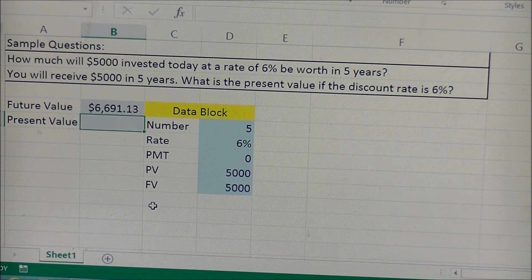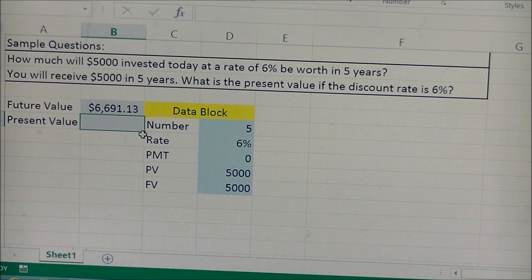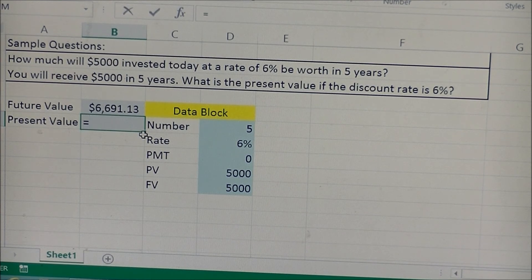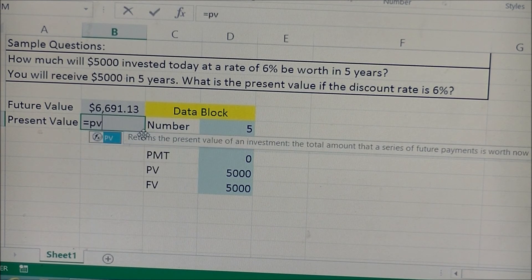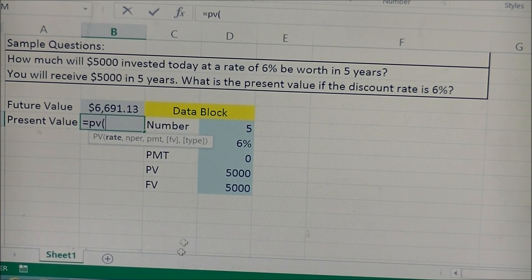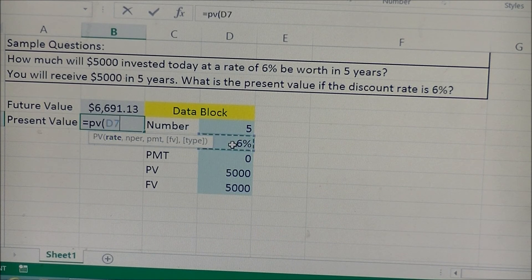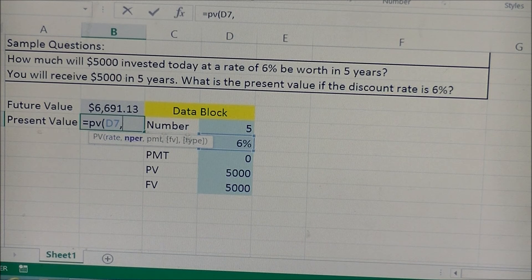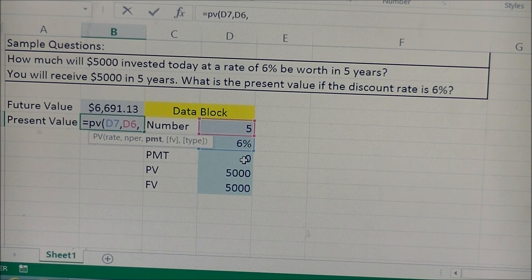And to solve for the present value of the $5,000, you're going to press your equal sign, then you're going to type in PV, which is present value, open up your parenthesis, and follow the prompts. It's asking for rate, so we'll click on rate, separate it with a comma. Next it's asking for number, so we'll click on the five, separate it with a comma.